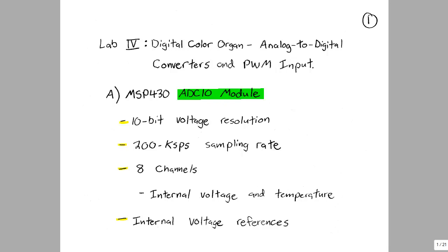There are eight channels in the ADC10 module. Two of these are internal, both voltage and temperature. These can be selected based on setting a value in a register. Finally, there are internal reference voltages of both 1.5 volts and 2.5 volts that can be used for the conversion.